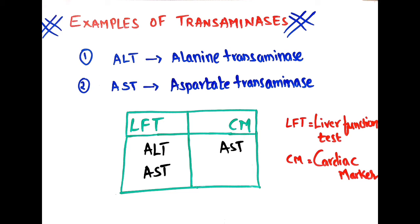Regarding the clinical significance of these two transaminases: ALT and AST are known as liver markers and are estimated in the liver function test. AST is also known as a cardiac marker and is estimated in cases of myocardial infarction.